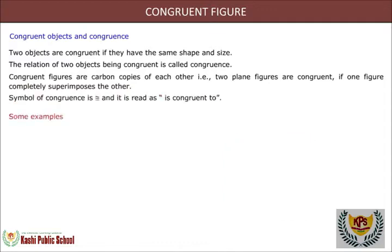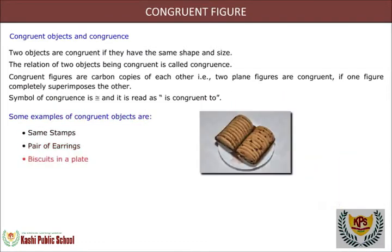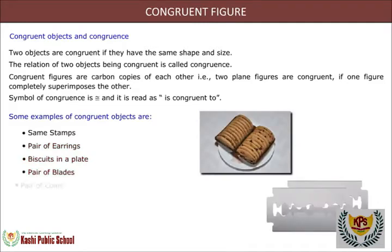Some examples of congruent objects are: same stamps, pair of earrings, biscuits in a plate, pair of blades, pair of coins, plates kept over one another, and keys of the same lock.